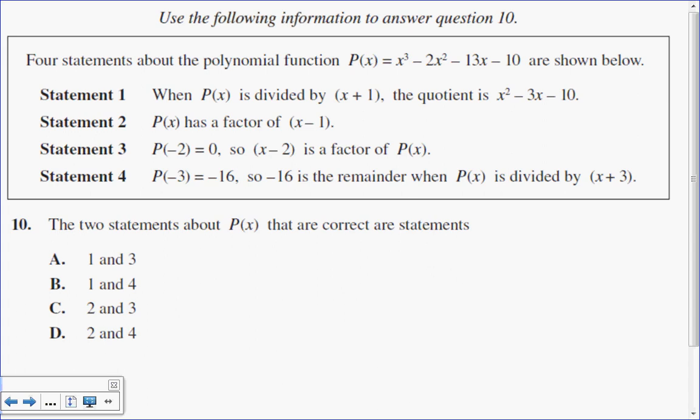In this multiple choice question, we have four statements that are made about the polynomial x cubed minus 2x squared minus 13x minus 10. We want to determine the truth to each of the statements. There's only two of them that are correct.